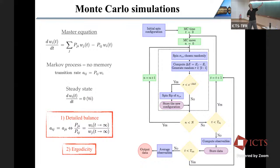This is the Metropolis algorithm — really Metropolis, Rosenbluth, Rosenbluth, Teller, Teller — but that's a different point. I guess most of you have seen this at some point; I just wanted to summarize to make sure everyone was on the same page.